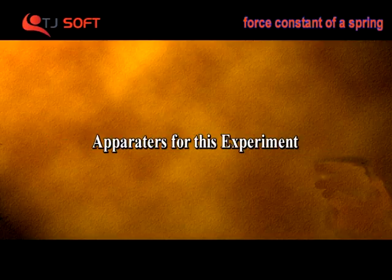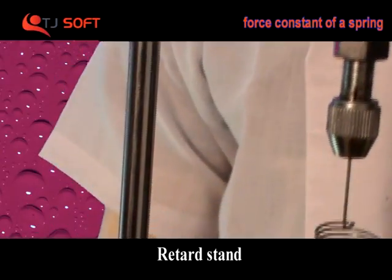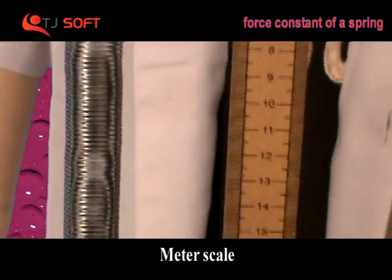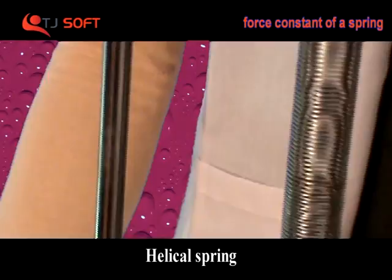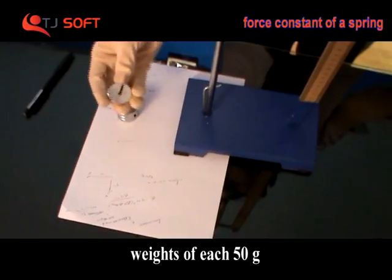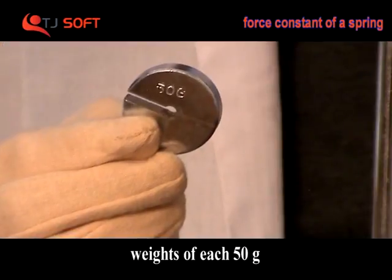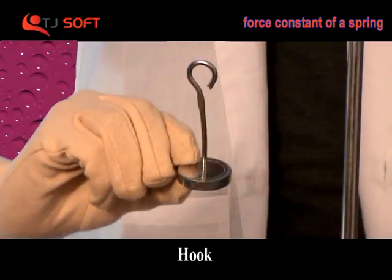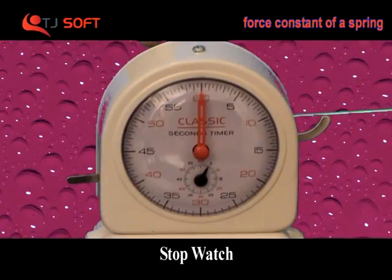Apparatus required: retort stand, meter scale, helical spring, weights of 50 grams each, hook, and a stopwatch.